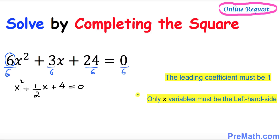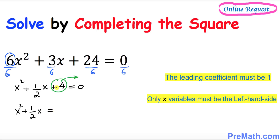In our next step we want to make sure that only the x variable is on the left hand side. That means this number 4 must go on the right hand side. So we can write this as x squared plus 1 over 2x equals negative 4, since moving the positive 4 to the other side makes it negative.